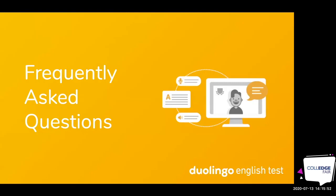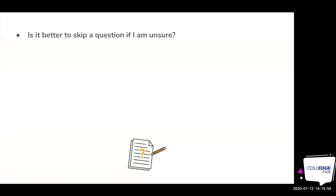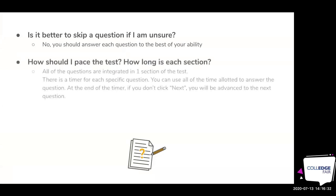A few frequently asked questions. Is it better to skip a question if I'm unsure? No — go ahead and answer. Each question has a timer on it, and the test is adaptive, so when you lock in your answer, that informs the test of your ability level. If you get a lot of questions right early on, it starts giving you harder questions. If you don't do as well, it drops down a bit. It continuously adapts, so missing one question early on is no problem.